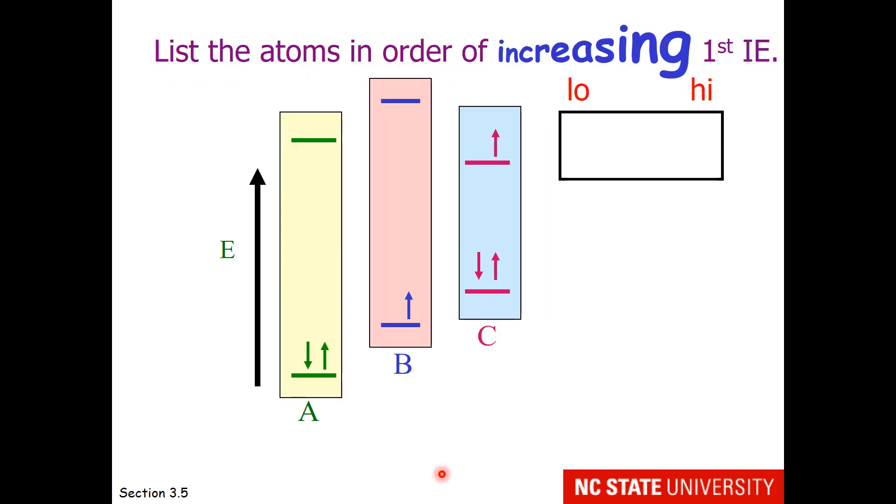So let's make this a slightly more challenging problem by having three mystery elements. We want to list the atoms in order of increasing first ionization energy. Now remember that ionization energy means we are going to remove an electron.